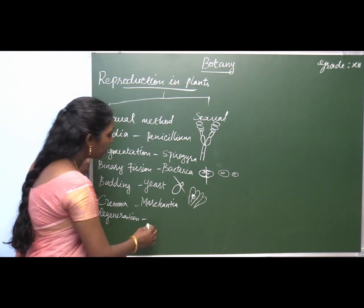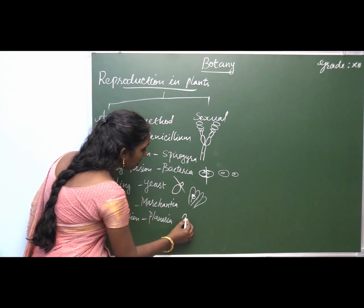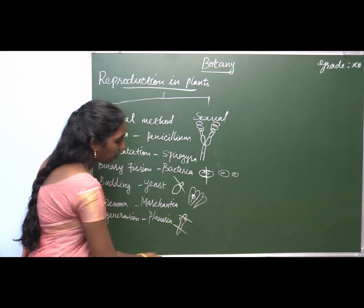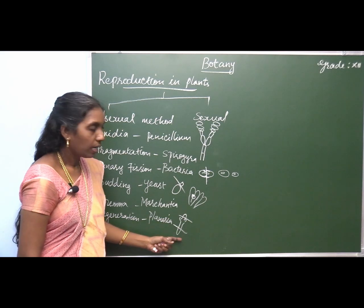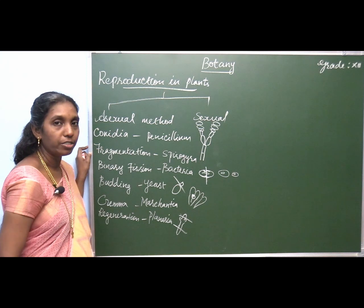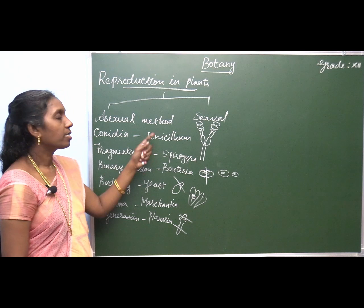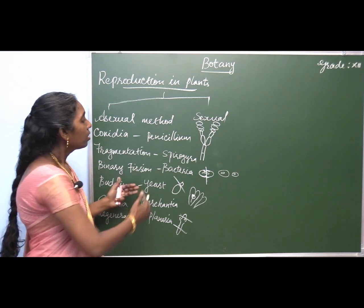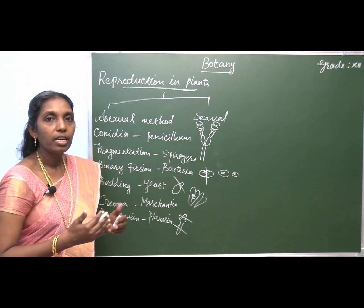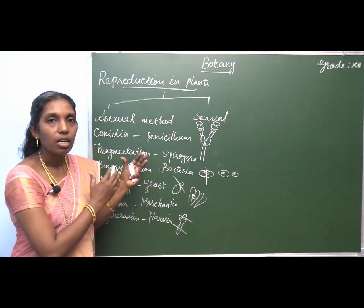Regeneration is observed in Planaria. Here, when the plant body is cut into different pieces — the head part or the tail part cut into several pieces — each piece has the ability to develop into a new organism. All these methods are asexual methods of reproduction. The young ones formed are morphologically and genetically identical, so they are called clones.